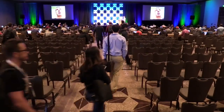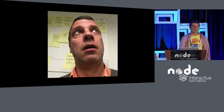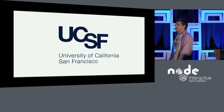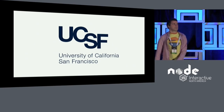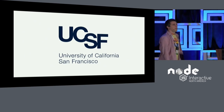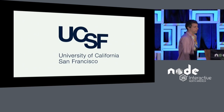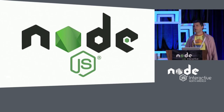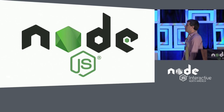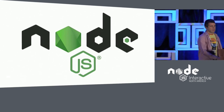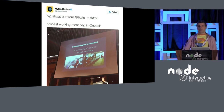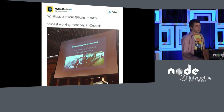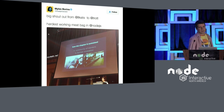I'm Rich Trott and it's customary to talk about yourself a little bit at the start of a talk. I work at the University of California in San Francisco in the library, but I'm not a librarian. I am also a member of the Node.js core technical committee. No lesser authority than Miles Borens has called me the hardest working meat bag in Node.js.